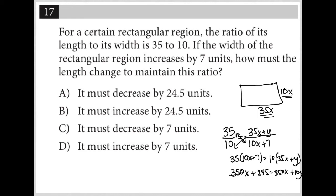So both sides of this equation have 350x, so they are going to cancel out. I'm left with 245 is equal to 10y, which, of course, if I divide both sides by 10, I'm left with y is equal to 24.5. So that's how much the length needs to increase by.